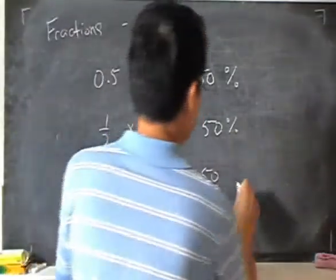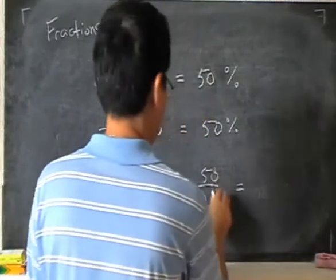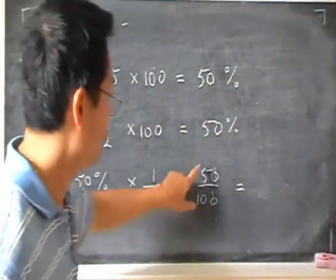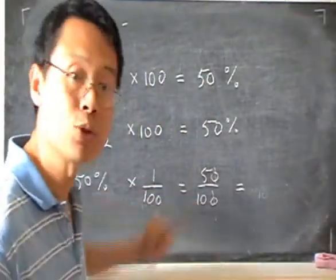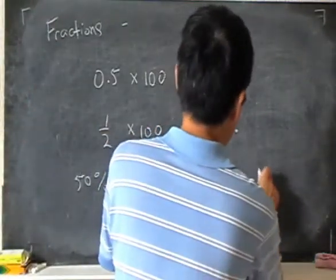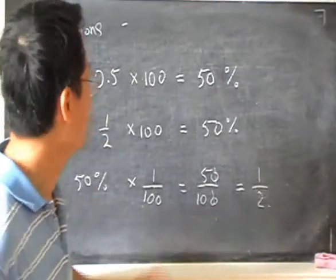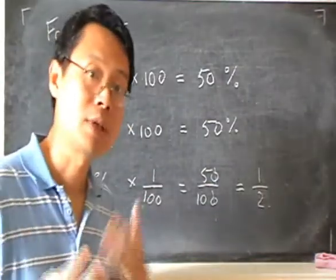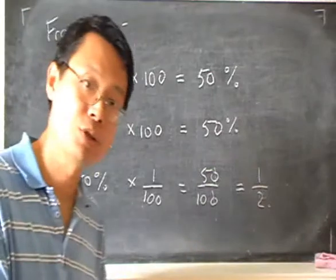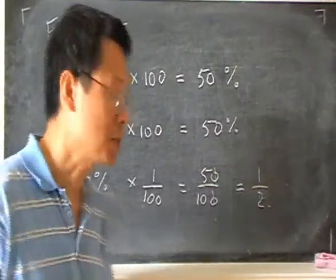And I can simplify that. Cancel to 0. And divide 5 by 5 on top and below. That gives me 1 over 2. Or I can also choose to write this as 0.5. Like that. So that's how we convert between percentages and vulgar or decimal fractions.